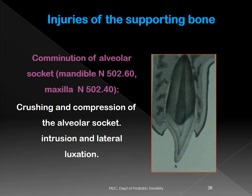The third group of injuries is injuries to the supporting bone — the alveolar process and basal bone. The first type is comminution of the alveolar socket — a crushing or compression injury of the alveolar socket in either intrusive or lateral luxation, where the bone gets crushed as the tooth moves.